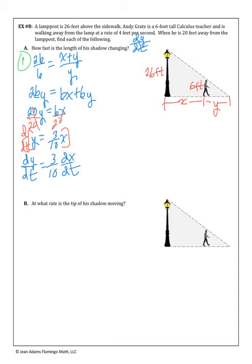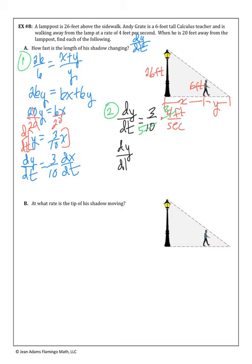Step two: substitute dx/dt equals 4 feet per second. dy/dt equals 3/10 times 4, and simplifying — 2 goes into both 4 and 10 — we get 6/5 feet per second. So the shadow length is increasing at 6/5 feet per second while Andy walks away at 4 feet per second.